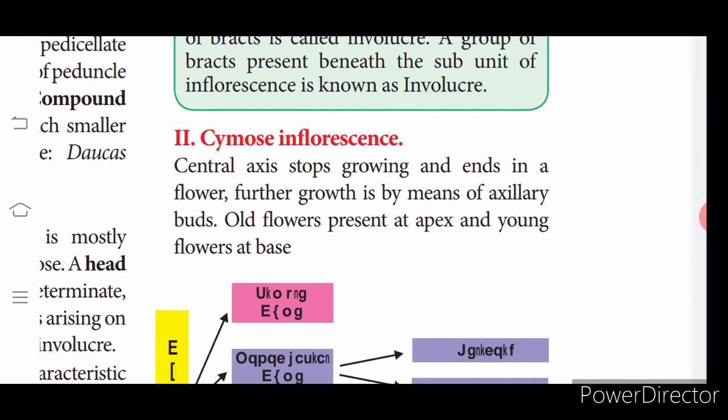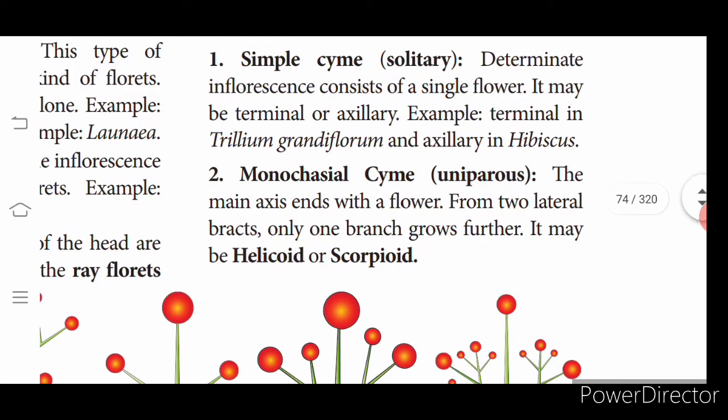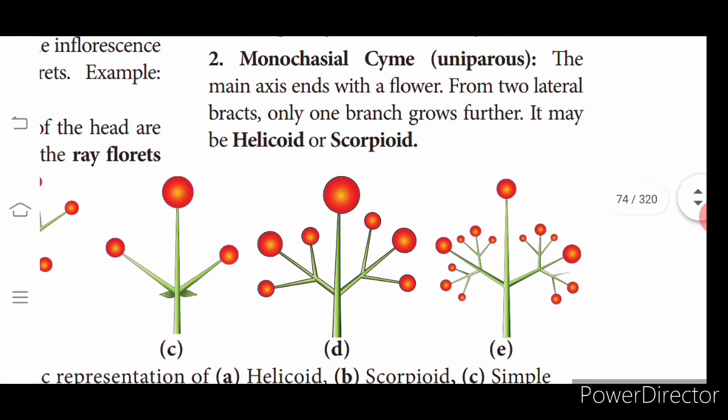Now we shall see cymose inflorescence in detail. Simple cyme is determinate — it will only grow to a certain extent. This determinate inflorescence consists of a single flower; it may be terminal (at the tip of the stem) or axillary (arising from the side of the main stem). Monocasial cyme: the main axis bears a flower, and from two lateral bracts only one branch grows further.